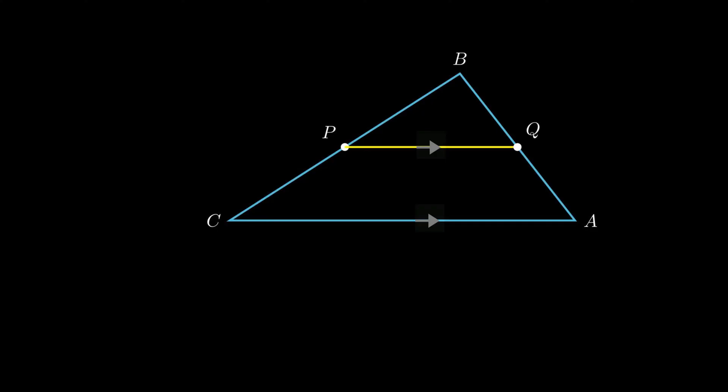That is, length of segment BQ is equal to length of segment QA. To prove this we need to draw a line parallel to side BC from point A.